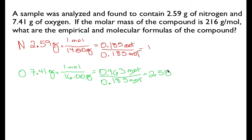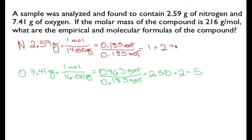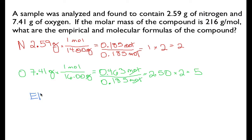That tells us the molar ratio — the ratio of the number of atoms of each element — is one atom of nitrogen for every 2.50 atoms of oxygen. Since we need whole numbers in a chemical formula, we multiply 2.50 by 2 to get 5, and also multiply 1 by 2 to get 2. So the empirical formula is N₂O₅, which is the lowest whole number ratio.